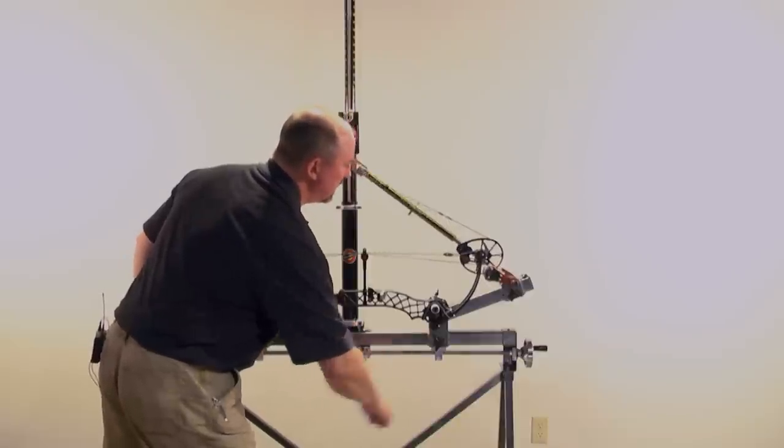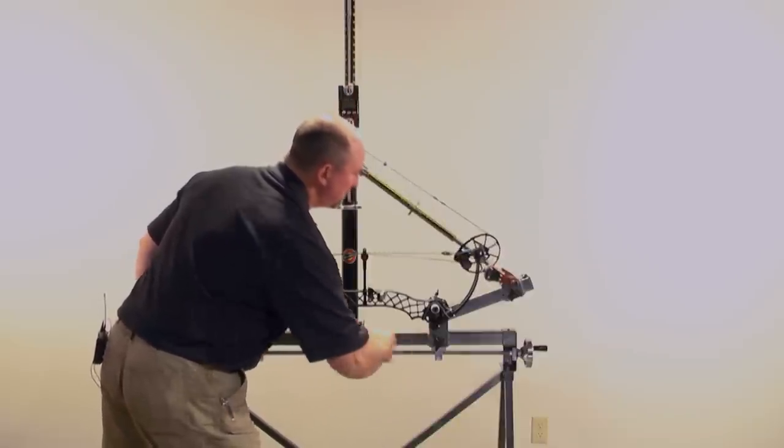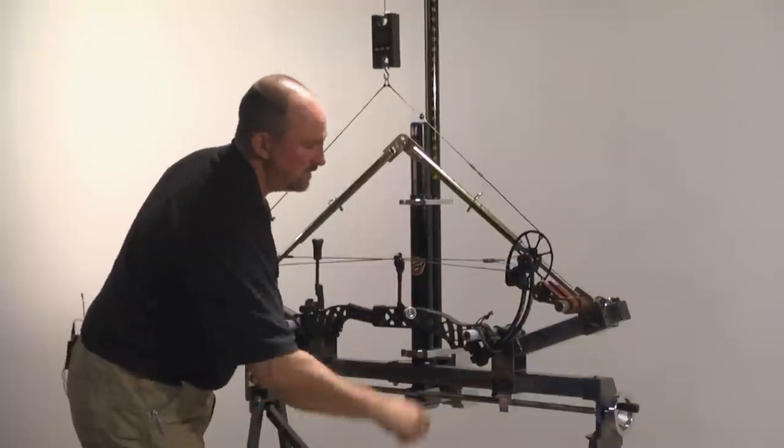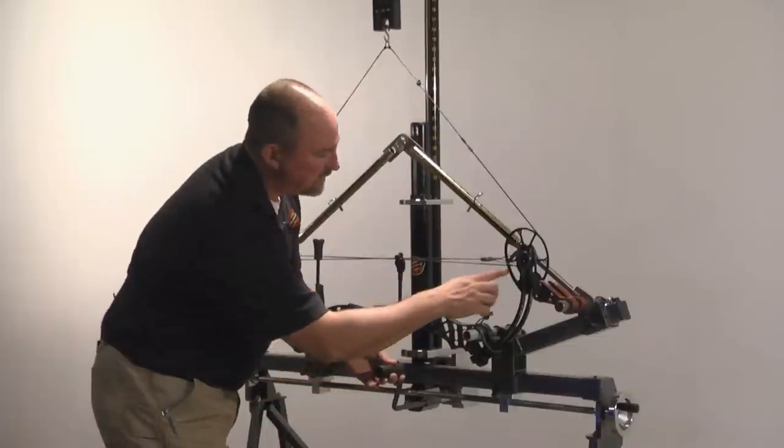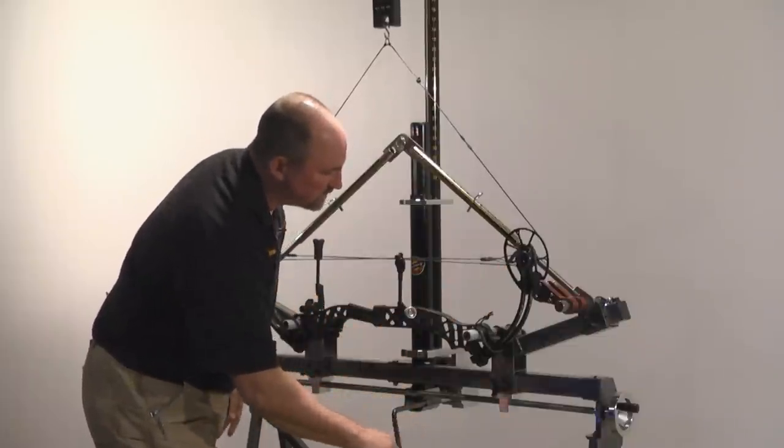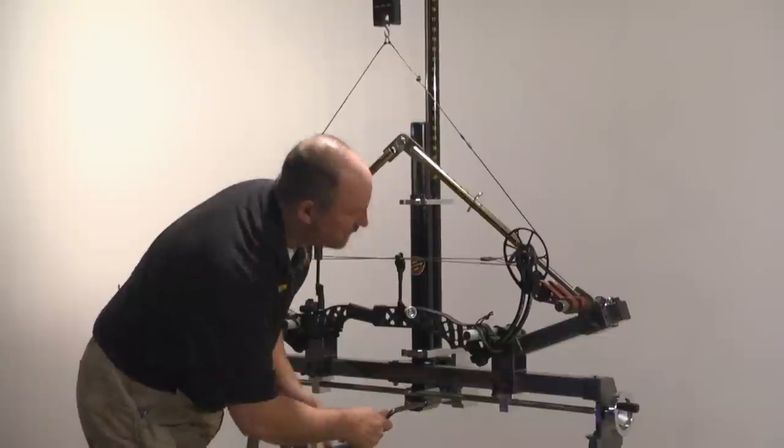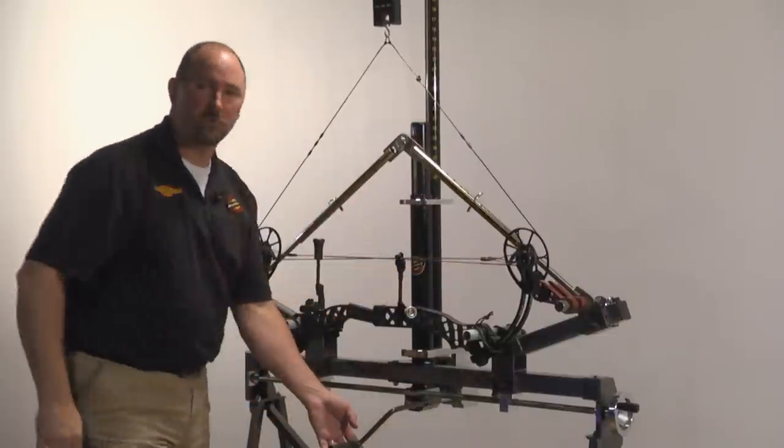When you get close to full draw, you're going to want to watch closely. Because of the mechanical advantage of the handle, you can damage the bow if you overdraw it. So you're going to want to watch here closely. Make sure you don't draw that past the stops.